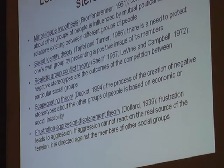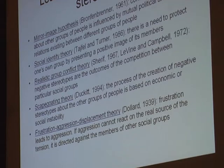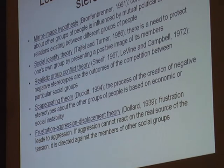Another theory is the scapegoating theory by Duckett, which says that the process of creating negative stereotypes about other groups is based on economic or social instability — when there is tension in society, members of one group are more open to receiving negative stereotypes about members of other groups. Then there is the frustration-aggression displacement theory from 1939, which says that social frustration leads to aggression, and if this aggression cannot react on the real source of tension — for example on international economic developments — it is often directed against the memory of other social groups or nations.